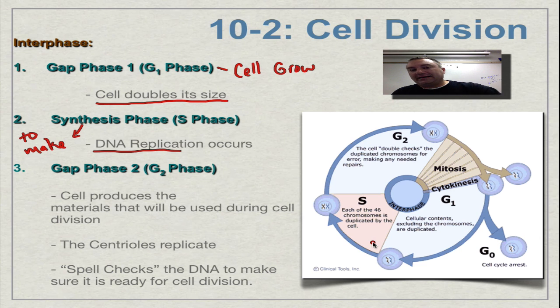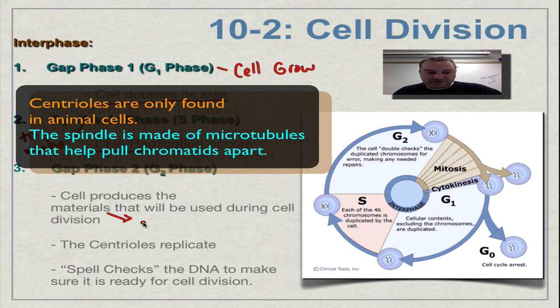You're beginning to prepare for mitosis. Now in the gap two phase, the cell is preparing for mitosis. So it begins to produce the materials that are going to be used during cell division. And this is mainly, if it's an animal cell, you're going to duplicate the centrioles.